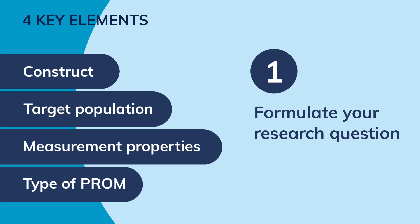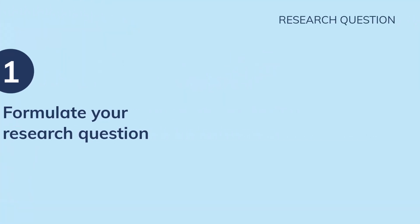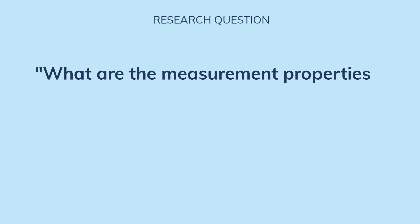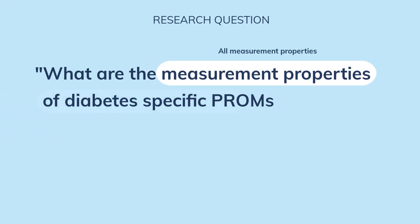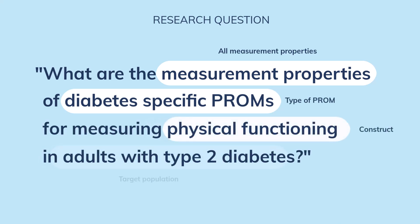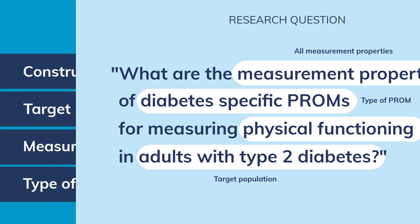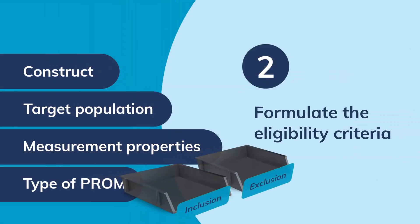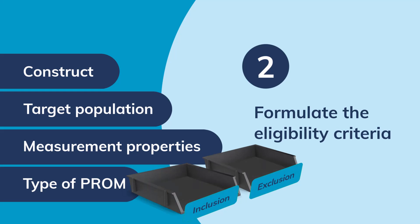In the manual, we give the following example: What are the measurement properties of diabetes-specific PROMs for measuring physical functioning in adults with type 2 diabetes? In step 2, you formulate the eligibility criteria using the same 4 key elements.